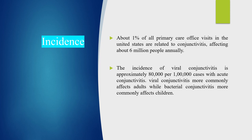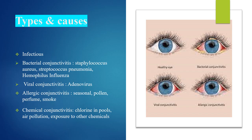Viral conjunctivitis more commonly affects adults, while bacterial conjunctivitis more commonly affects children. Types and causes — Infectious conjunctivitis is divided into bacterial conjunctivitis and viral conjunctivitis. Bacterial conjunctivitis is caused by Staphylococcus aureus, Streptococcus pneumoniae, and Haemophilus influenzae.